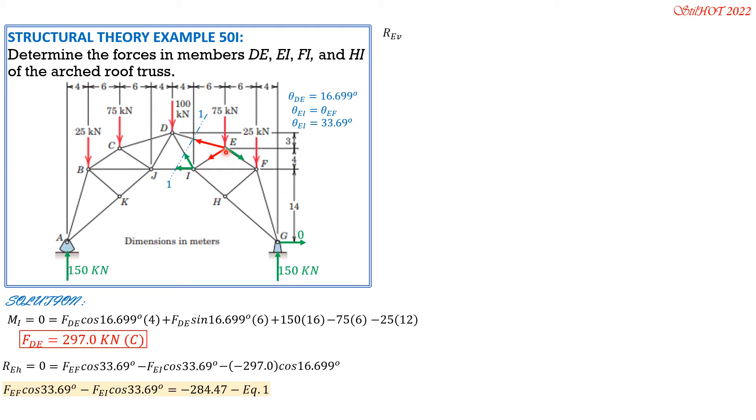Then vertical component of resultant at E is zero. Vertical component of FDE is negative 297 sine of 16.699, then minus FEF sine of 33.69 minus 75, then minus FEI sine of 33.69 degrees. Transposing these two to the left, so we have FEF sine 33.69 plus FEI sine of 33.69 equals negative 297 sine 16.699 minus 75, and that is negative 160.30. Equation Two.